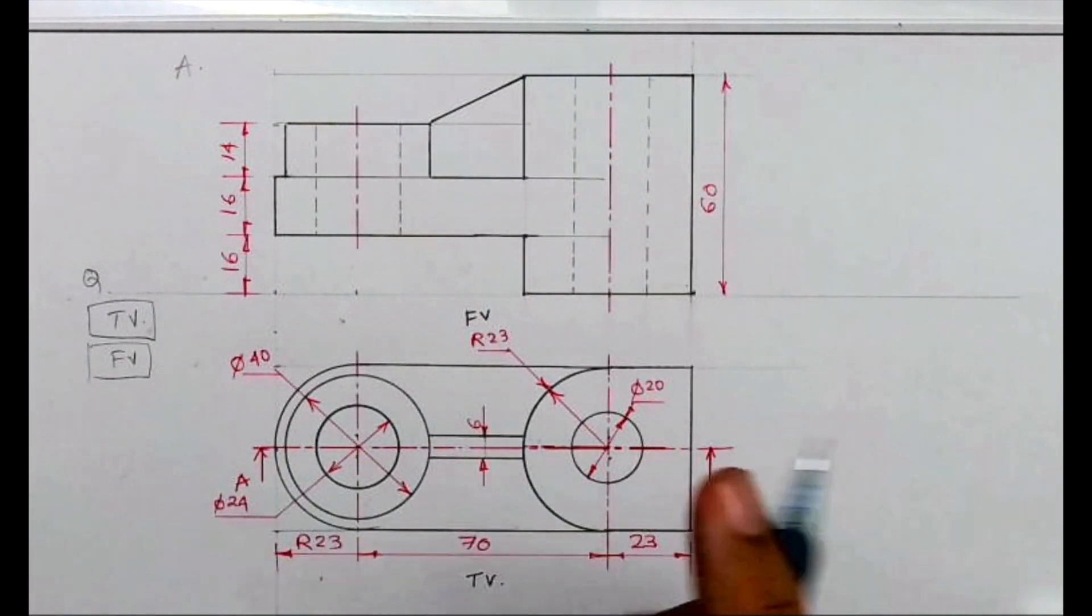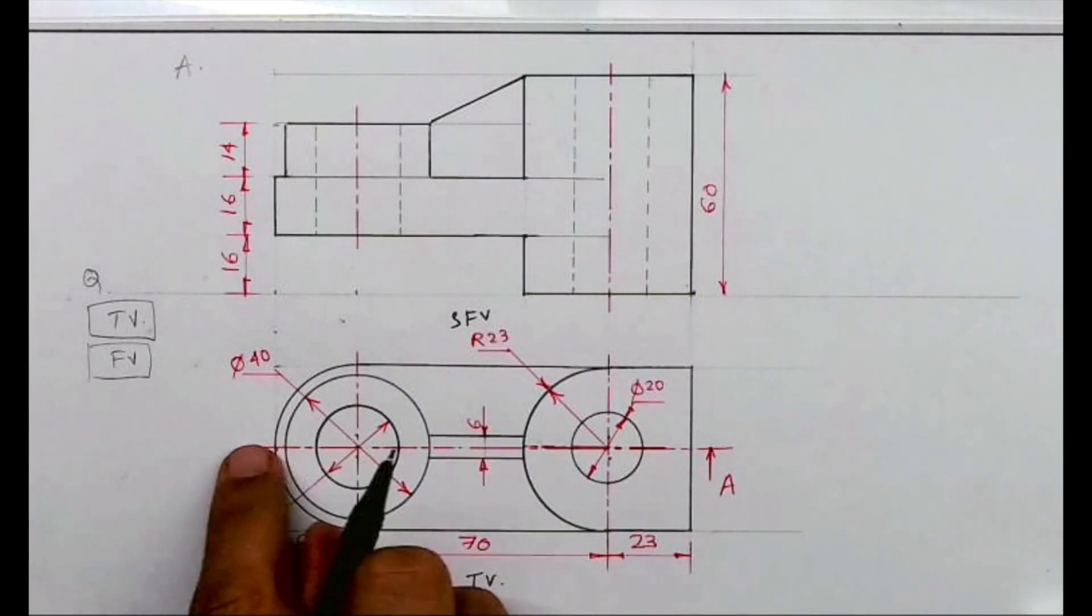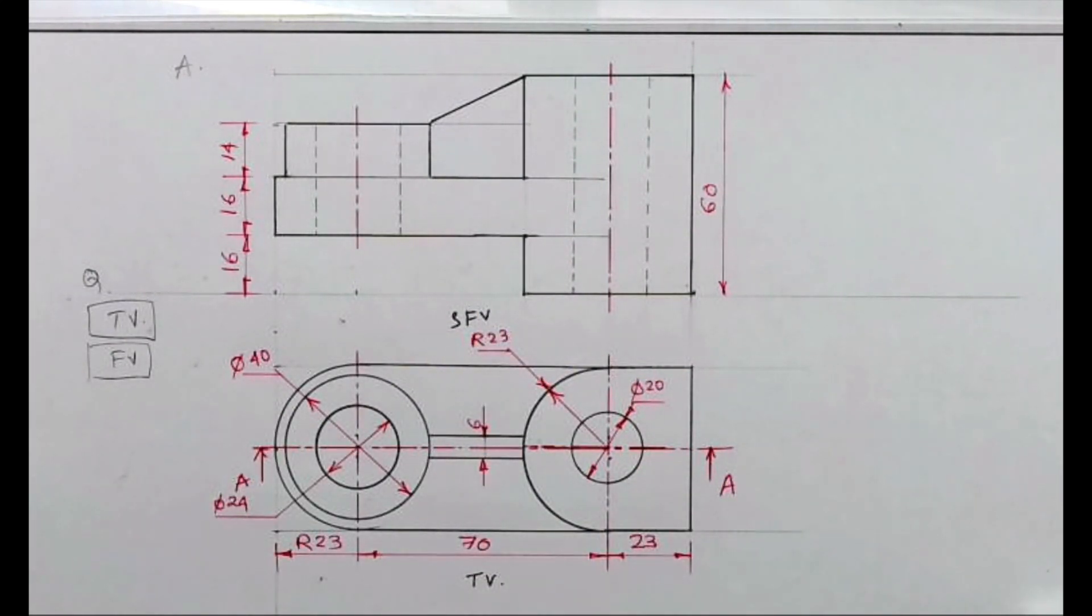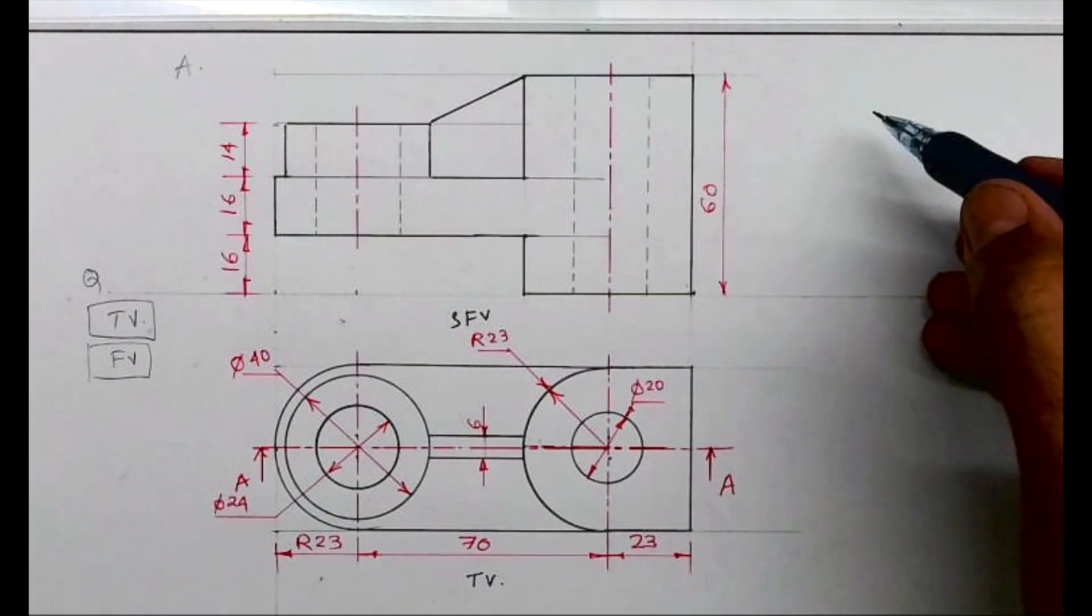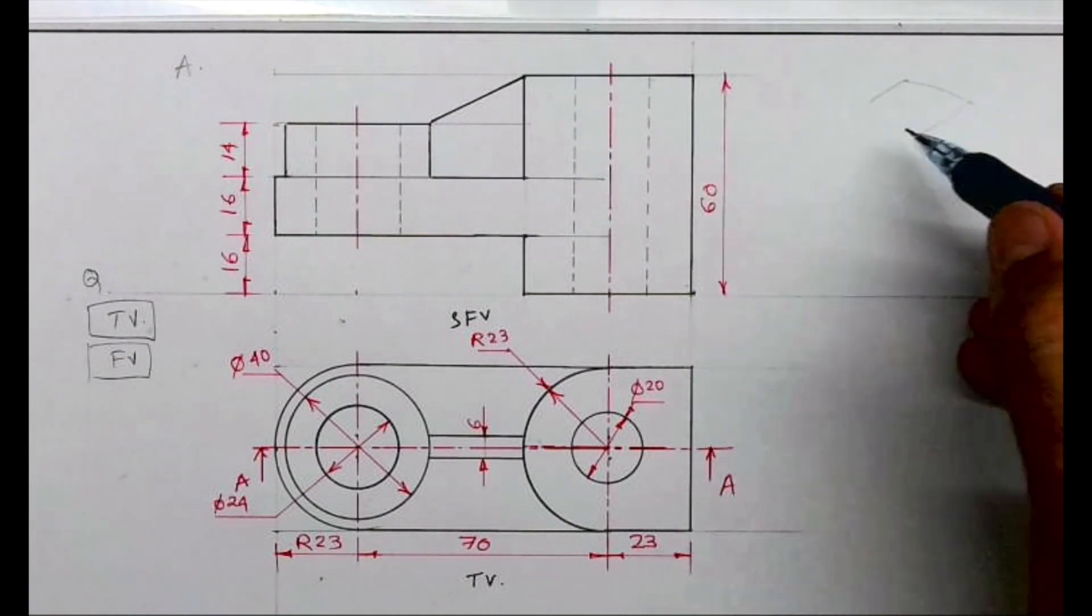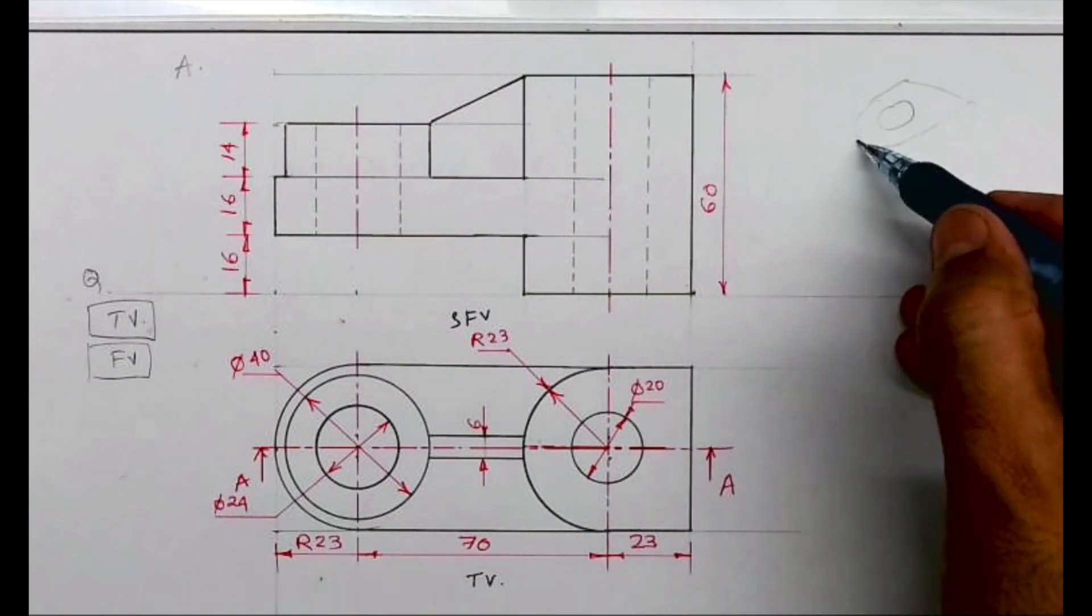And we'll draw sectional front view along A. So when I cut from here, how will it look? Now see, we can see this object, how it looks in 3D. This is a circular portion.